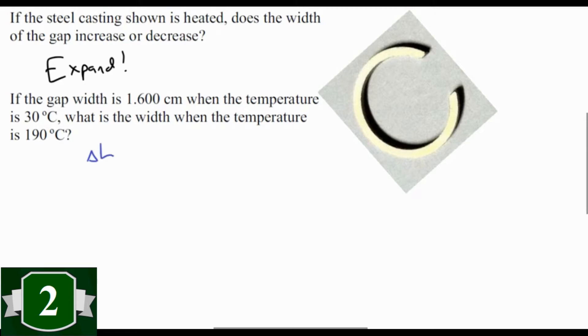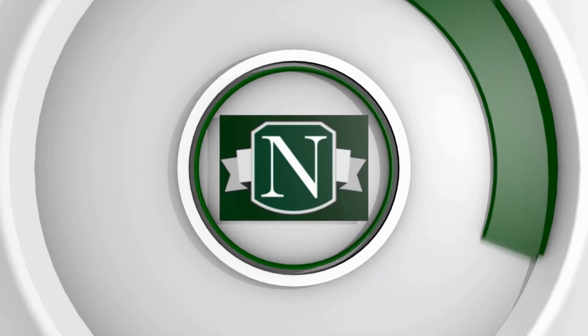This is a very straightforward question. Thermal expansion says Delta L equals alpha L naught Delta T. Alpha is the coefficient of thermal expansion, which for steel we can look up and find is 11 times 10 to the minus 6 per degree Celsius. Plug in the rest of your numbers, you get 0.002816 centimeters. So the new length is 1.603 centimeters. That's all there is to it.